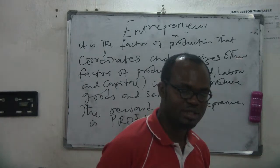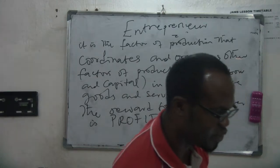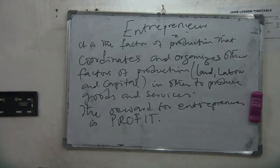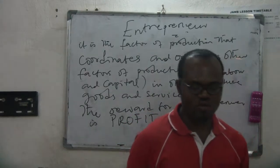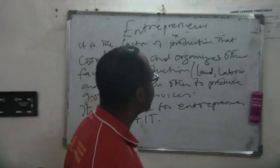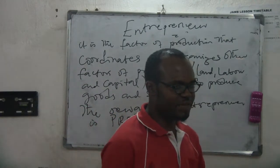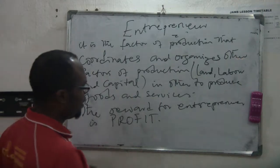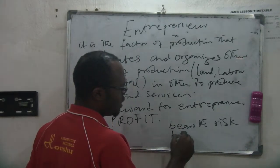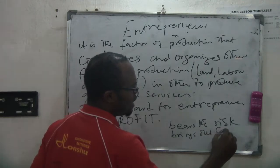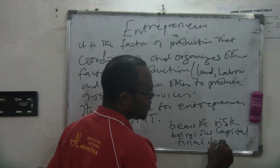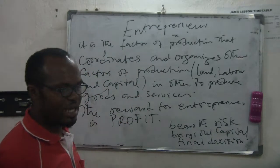The entrepreneur is the person that risks everything. When you come to an organization, the entrepreneur is the person that owns the business. For example, Facebook is owned by an entrepreneur known as Mark Zuckerberg. He has workers — who are the labor — that work for him to make profit. He has capital, buildings, computers, and land where the building is situated. He is the person that coordinates and tells everybody what the company needs in order to make money.